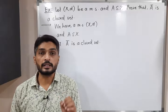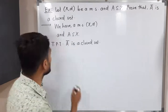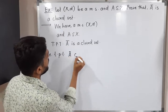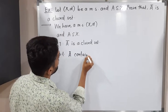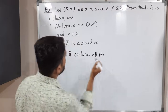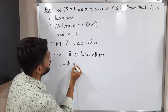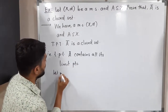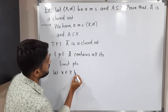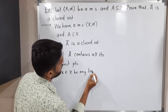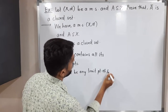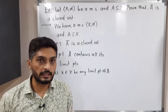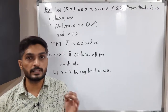That is, to prove that Ā contains all its limit points. Let x belonging to the metric space X be any limit point of Ā. You are familiar with the definition of limit point: B(x, r) minus the singleton {x}, intersected with A, is not equal to the empty set — then we say it is a limit point.